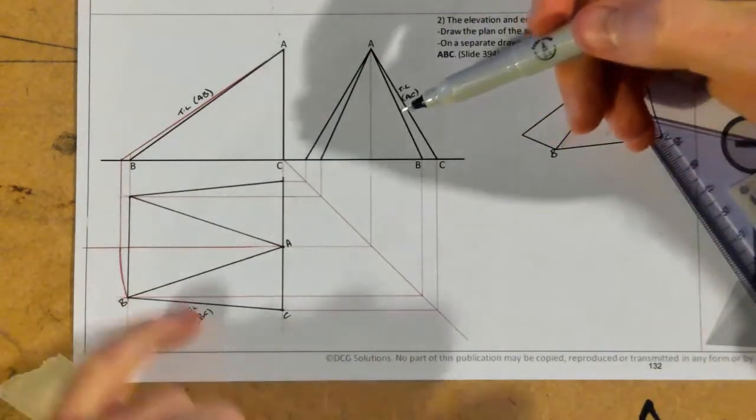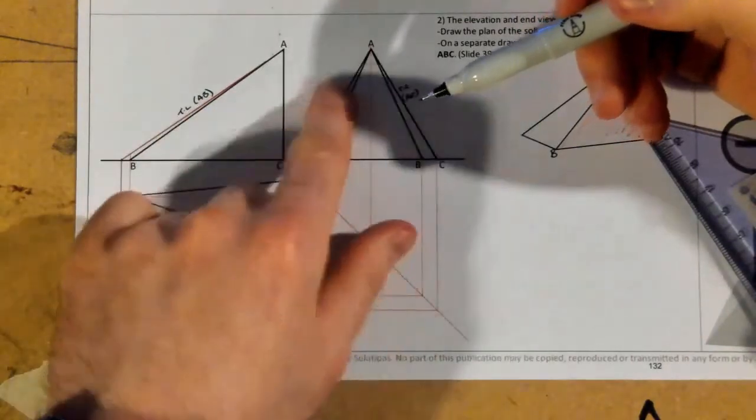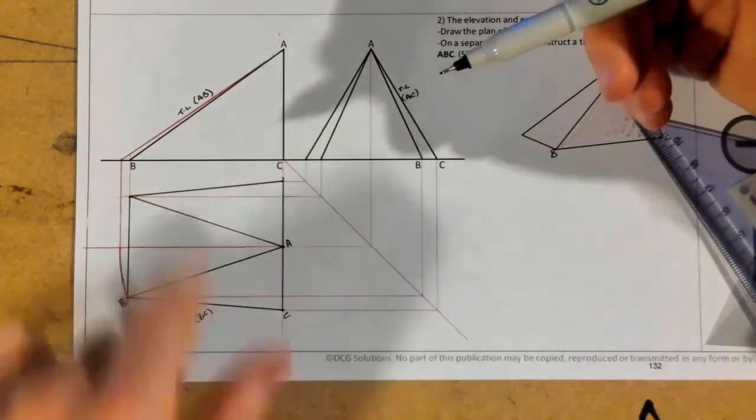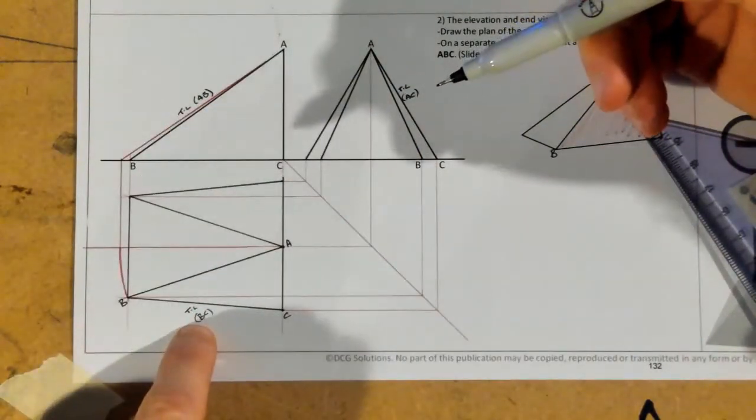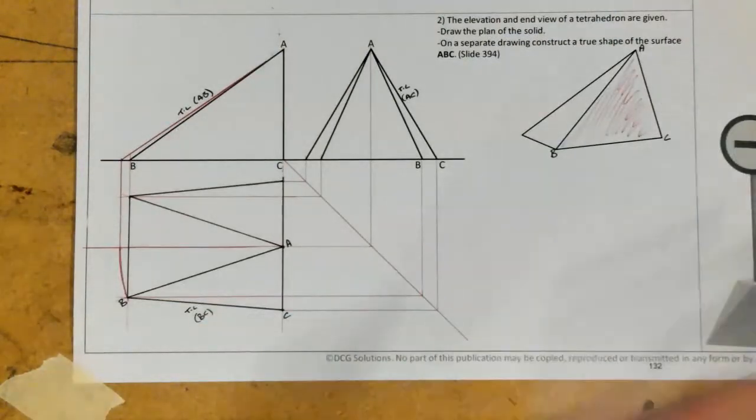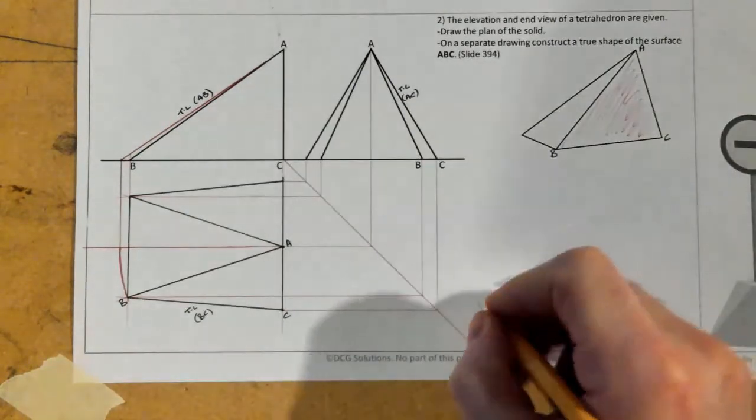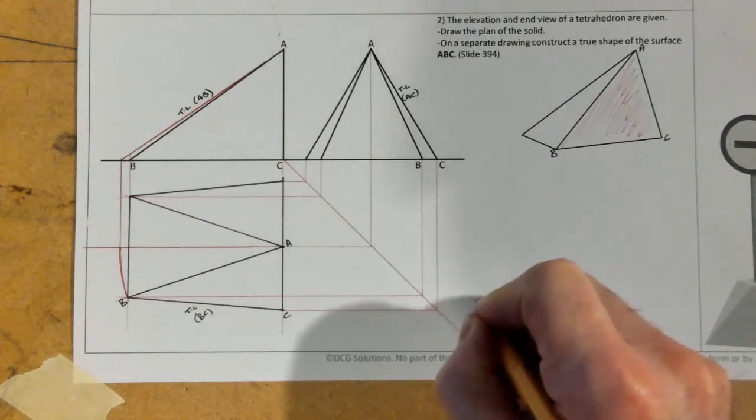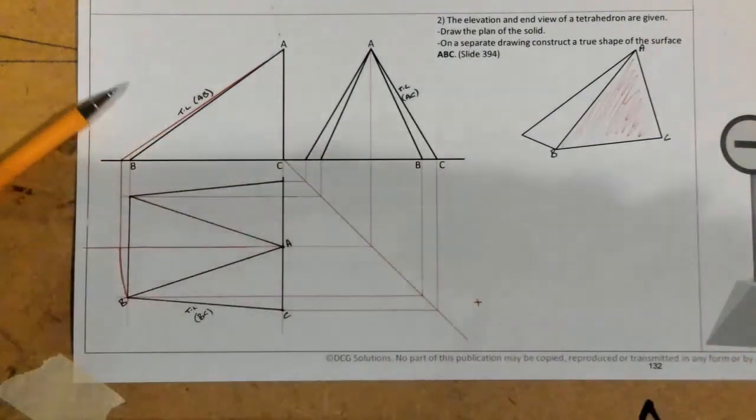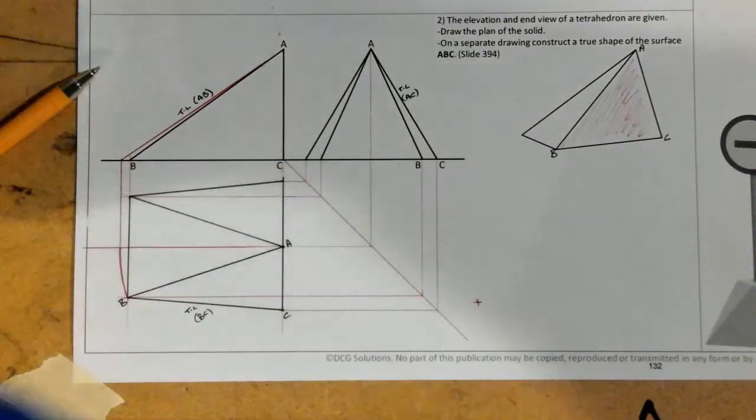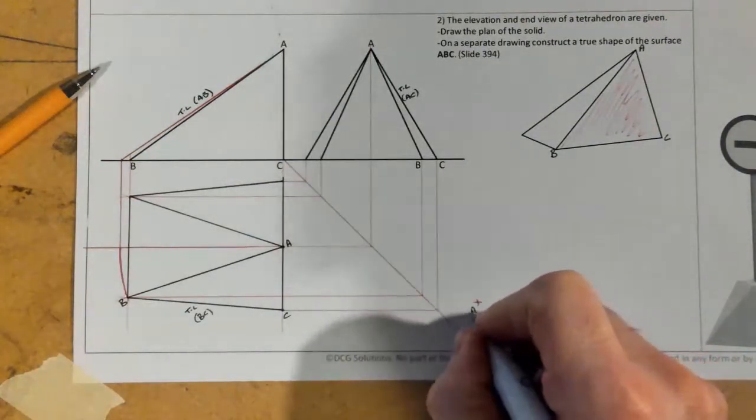Okay? Now, at this point, I have the three true lengths. I have the true length of A, B. I have the true length of A, C. And I've got the true length of B, C. So with the three true lengths, I should be able, at this point, to create my true shape. So I'm going to take all of them. I'm just going to pick a point right here. It doesn't matter where exactly. And I'm going to call that point A.